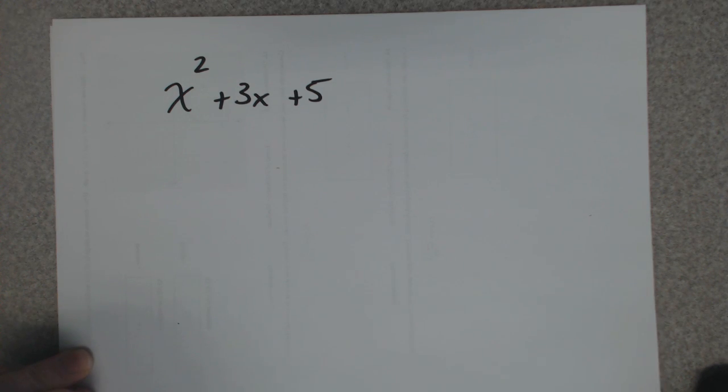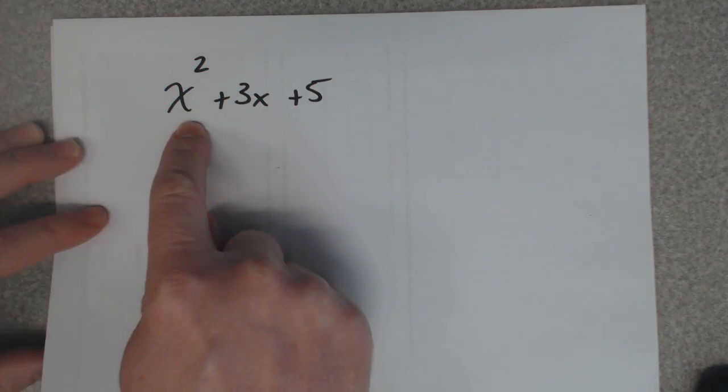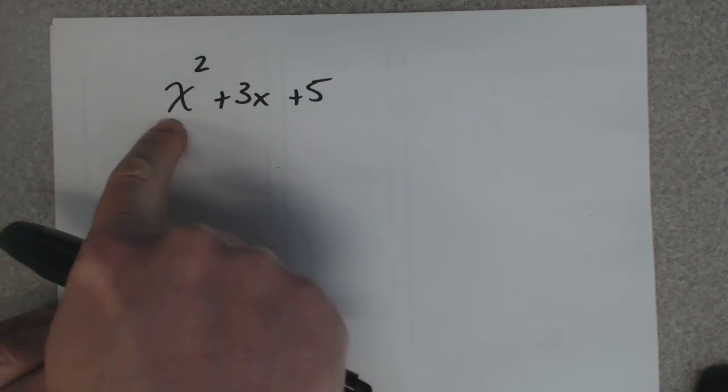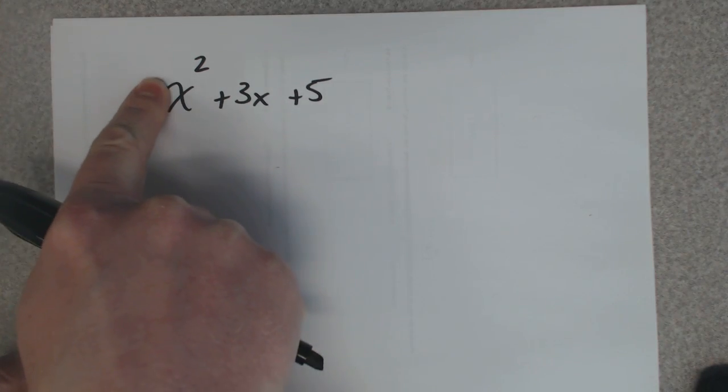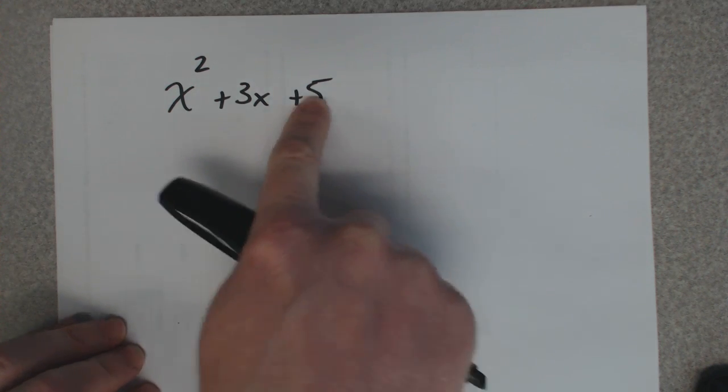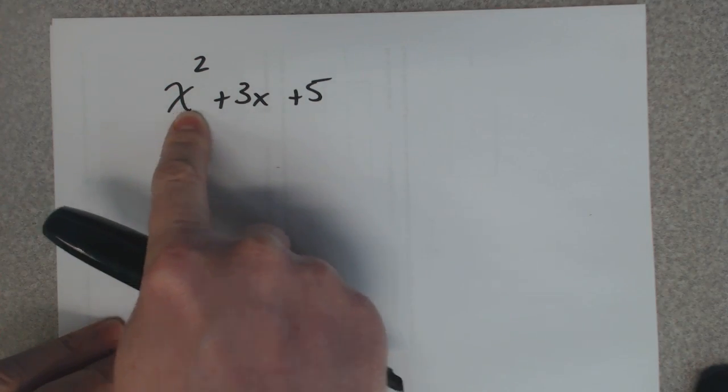In that previous video, I took quadratics like this and did the completing the square process on them. I said you really only want to do this if there's a 1 in front, because mainly you want to find the vertex and put it in vertex form. But it can be done when there's a number in front.